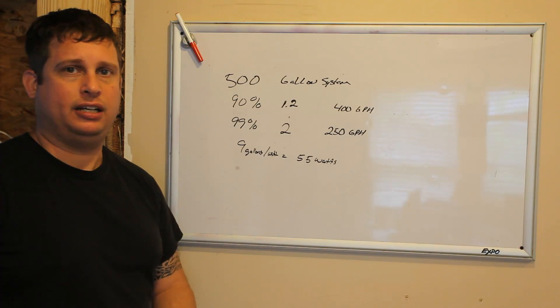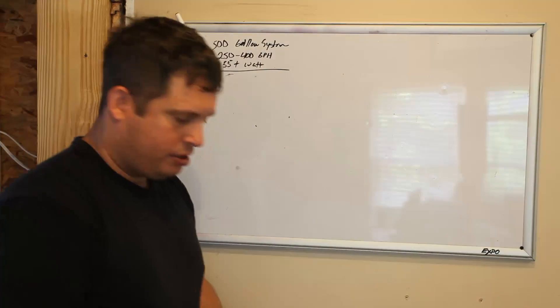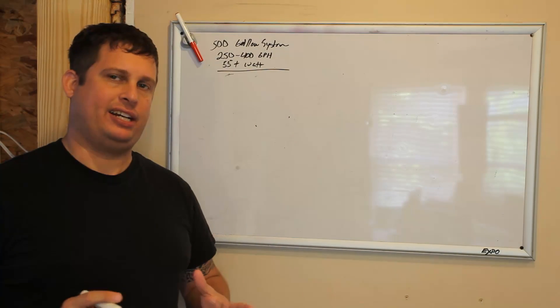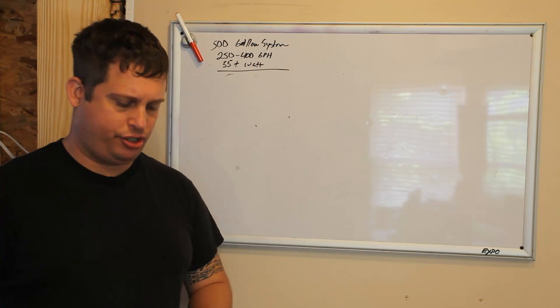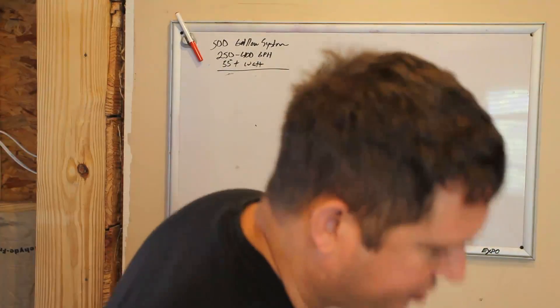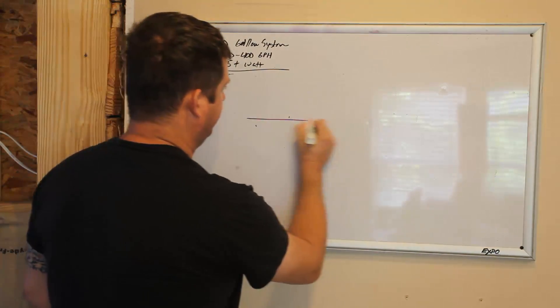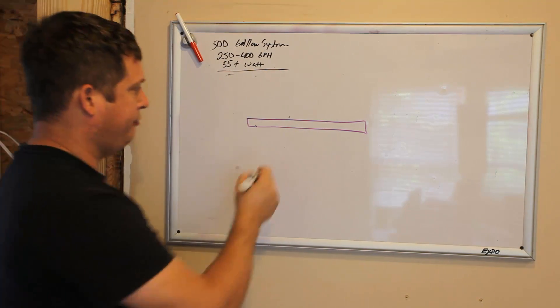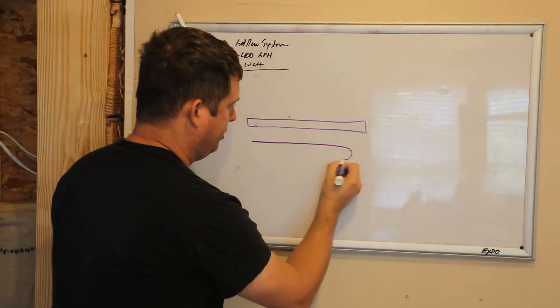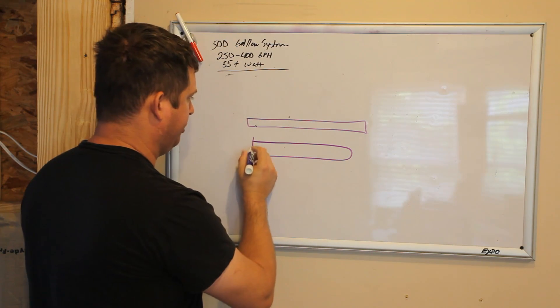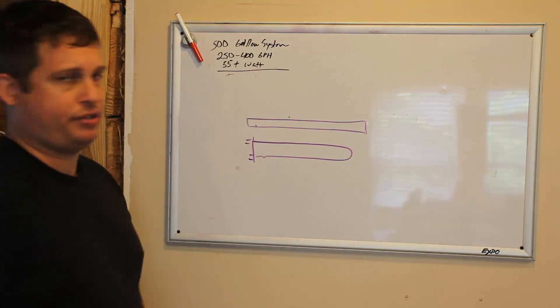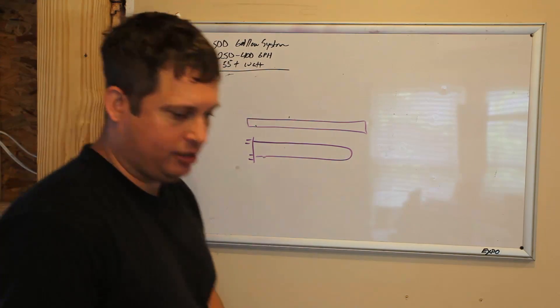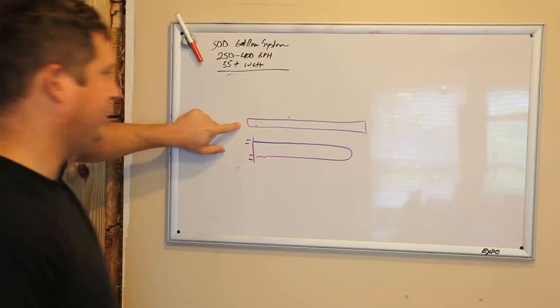I want to talk a little bit about the design. The bulbs come in two different form factors. One form factor is a long fluorescent bulb and the other form factor is a U-shaped bulb.